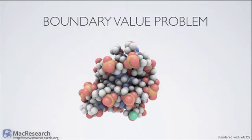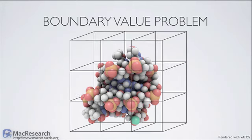Here we have a typical molecule of small to medium size — in this case from PDB2AKG, the G quadruplex from Oxytricha nova, a solution structure. The details of the molecule aren't important; what matters is we have a bunch of atoms. In setting up our boundary value problem, we place these atoms into a grid. We can calculate contributions of all atoms to each grid point either from a grid-centric or atom-centric approach.